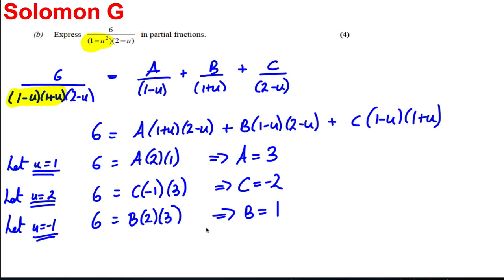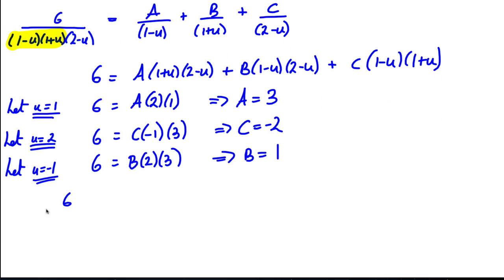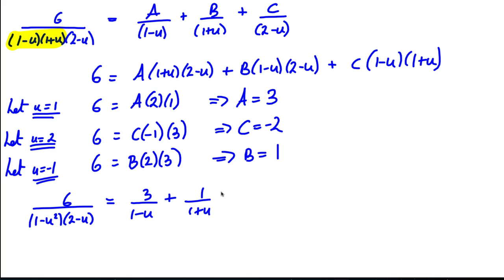So expressing this in partial fractions: 6 over (1−u²)(2−u) equals 3 over (1−u) plus 1 over (1+u) minus 2 over (2−u). I'm confident that's correct.